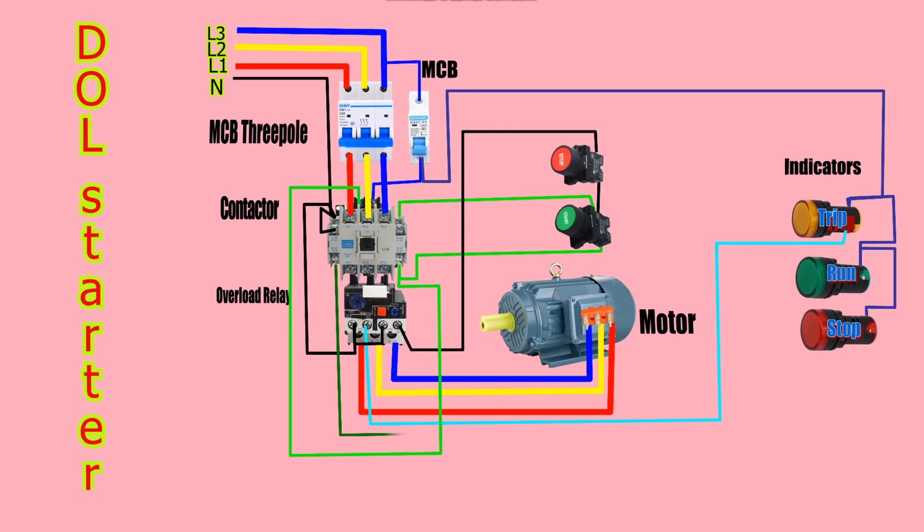As shown in the video, a dark green wire is taken from the auxiliary open contact of the magnetic contactor and linked to the second terminal of the run indicator.